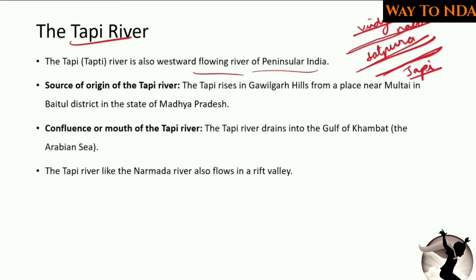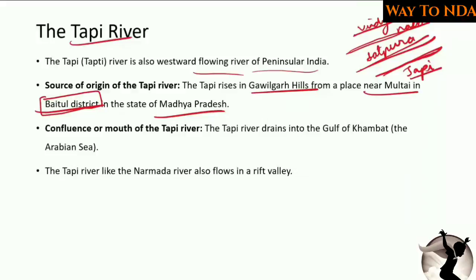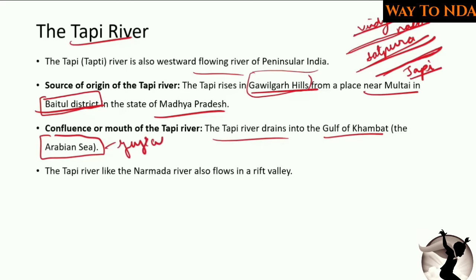The source of origin of the Tapi river is in the Gavilgard hills, near Multai in Betul district, in the state of Madhya Pradesh. It drains into the Gulf of Khambhat, that is the Arabian Sea, in Gujarat. Like the Narmada river, the Tapi river also flows in a rift valley.